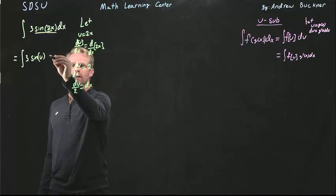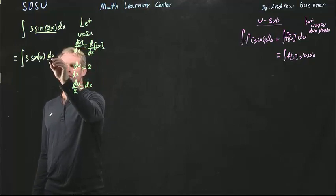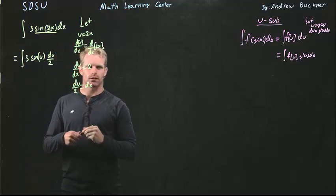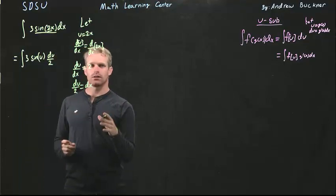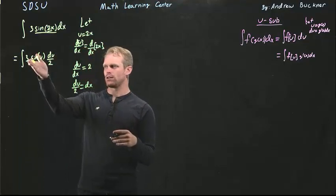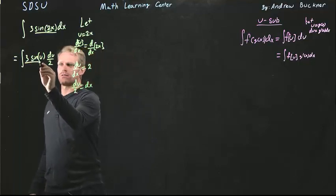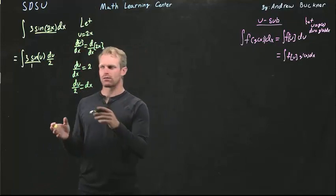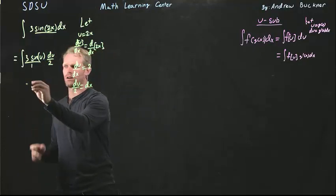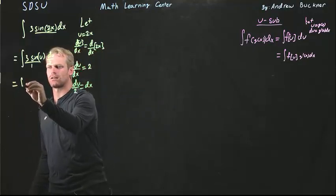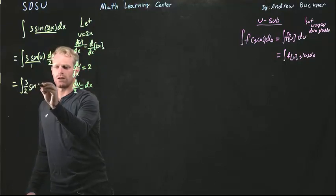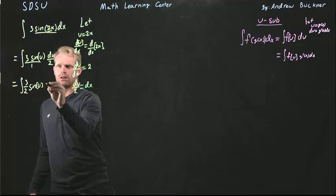So now I have my du over 2 as my problem here. The next thing I'm going to notice is I have 3 sine u over 1 multiplied by du over 2. I notice that because I'm multiplying across, I can now rewrite this as 3 over 2 sine of u du.